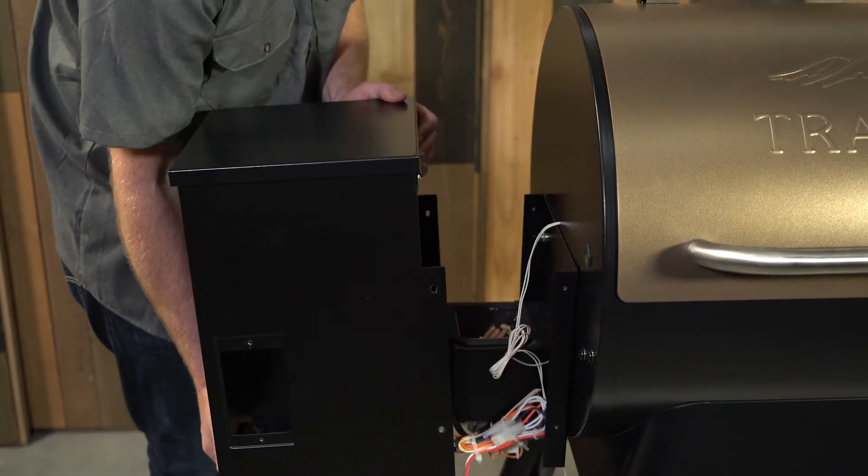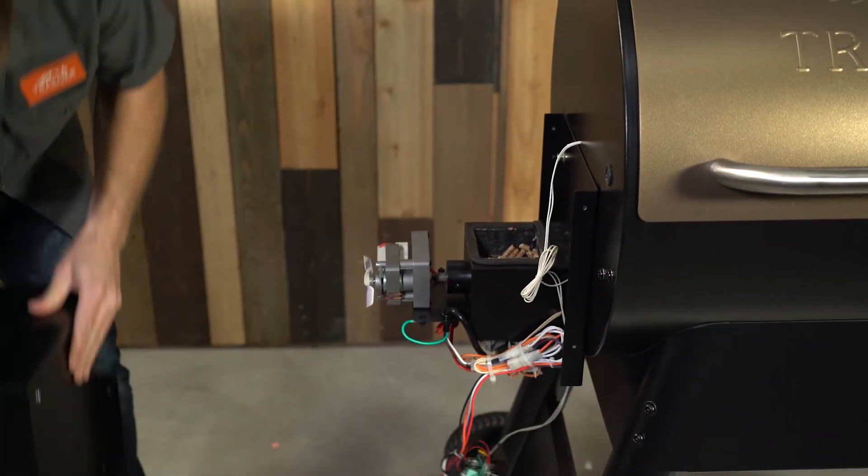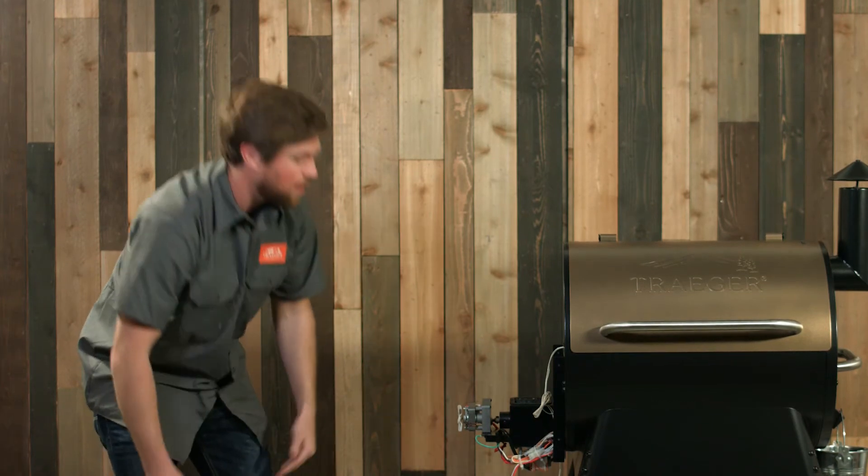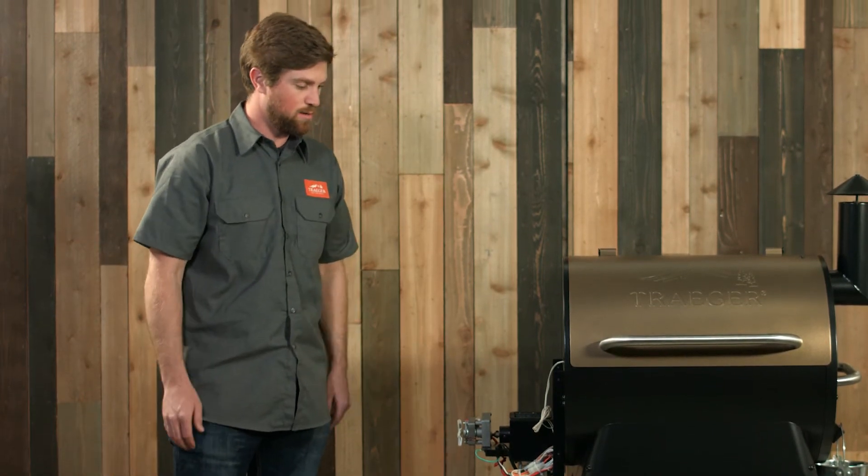Just lift up a little bit. Your controller may dangle down, shouldn't be a problem when it's hanging by the wires. And now we are into the guts of the grill and we can work on our auger jam.